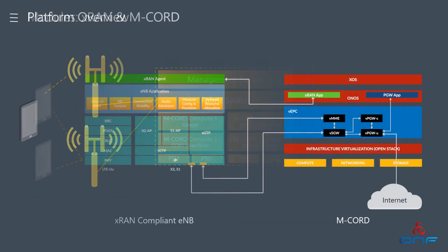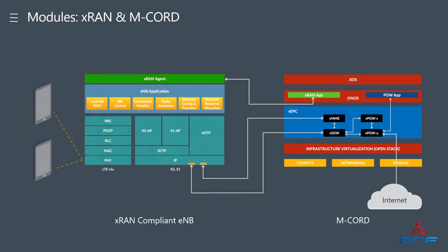What we have done here is collaborated and have a single controller which not only takes care of the user plane of LTE but also controls the RAN portion of it. We have enhanced the existing ONOS controller to take care of both the LTE user plane and the RAN portion, moving the XRAN controller's functionality within the ONOS controller. This is the ONOS functionality with the P-Gateway application that controls the user plane of LTE, and there is the green box which is the XRAN application taking care of the RAN.